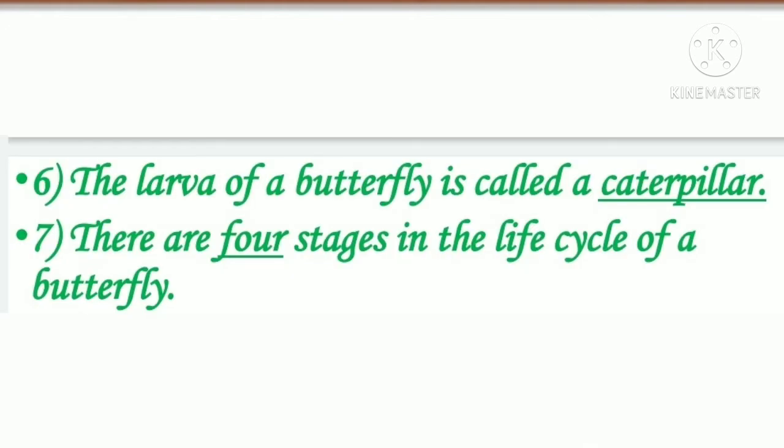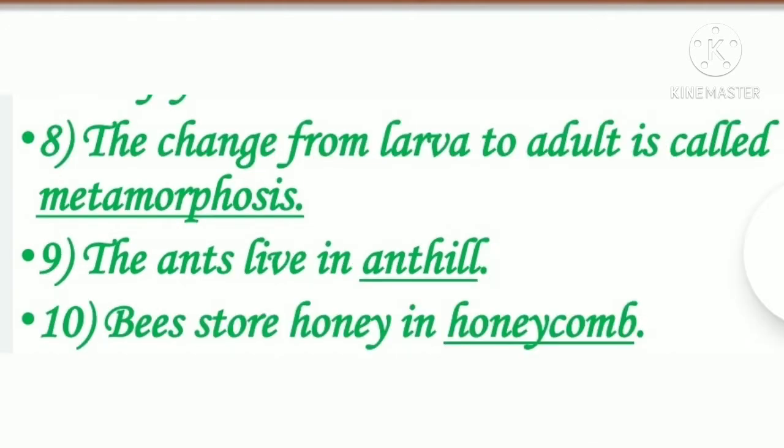Sixth one: the larva of a butterfly is called a caterpillar. Seventh one: there are 4 stages in the life cycle of a butterfly. Eighth one: the change from larva to adult is called metamorphosis. Ninth one: the ant lives in an anthill. Tenth one: bees store honey in a honeycomb.